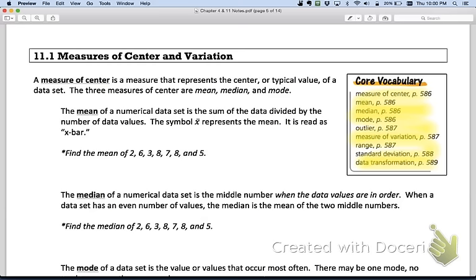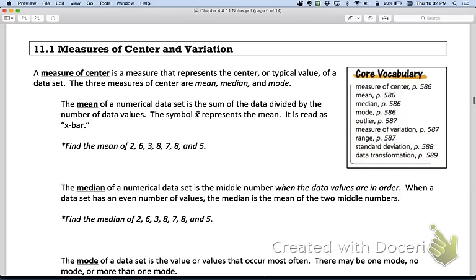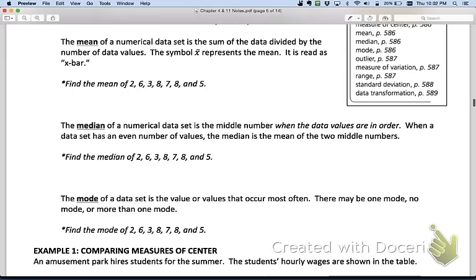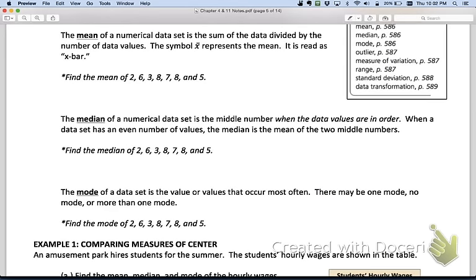The mean of a numerical data set is the sum of the data divided by the number of data values. Now, here's something that is probably going to be new.